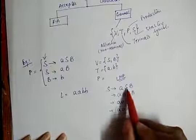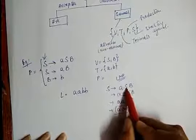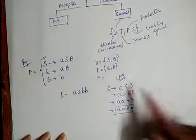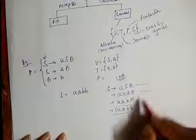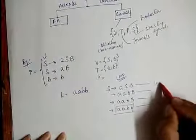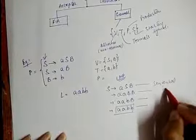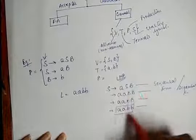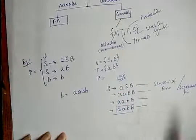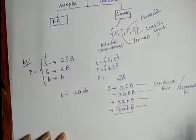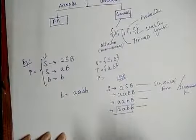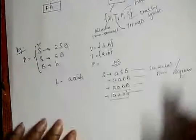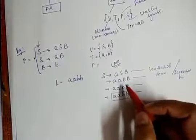It is called a leftmost derivation because we take the left letter first and then move to the right-hand side. Each individual step in the derivation is called a sentential form, and all these steps together are known as a derivation. Now, if we have to create a parse tree or derivation tree for this string using this grammar, we can do so using these derivation steps.